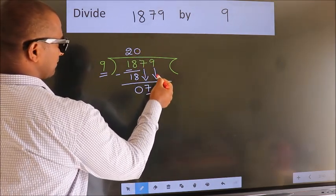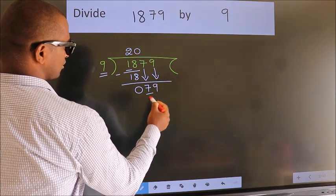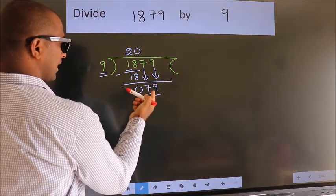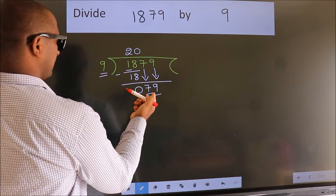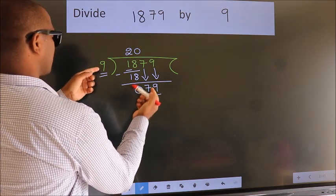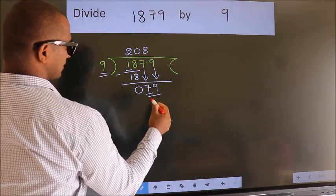Then only we can bring down this number, so 79. A number close to 79 in the 9 table is 9 times 8, which is 72.